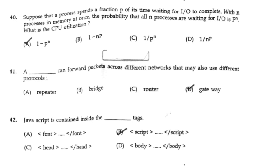Suppose that a process spends a fraction p of its time waiting for input/output to complete. With n processes in memory at once, the probability that all n processes are waiting for input/output is p^n. What is the CPU utilization? The answer is option A: 1 minus p^n.